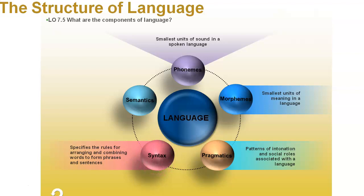Then we have syntax — the specific rules for arranging and combining words: what goes first, the noun, the verb, the adjective — all of that, which you've been learning in English class for years. And then we have semantics, which you've seen before when we talked about semantic memory. The thing to remember about semantics is that it means meaning — the meaning of a word. Depending on the sentence being used, sometimes the meaning of the word can change.